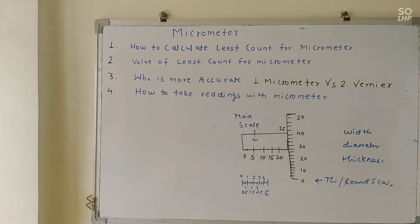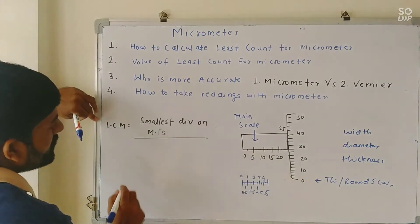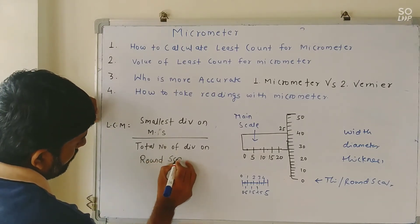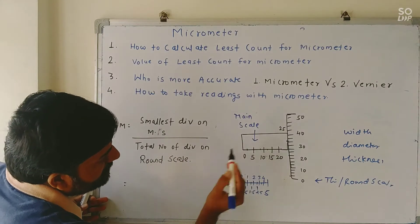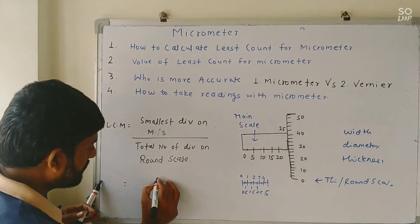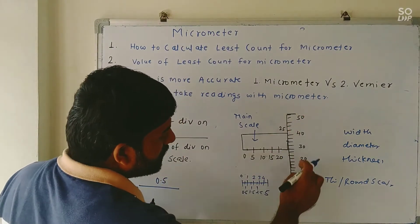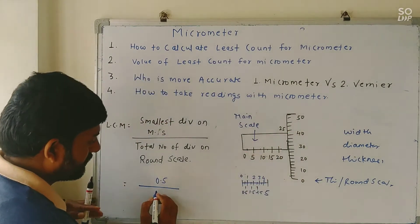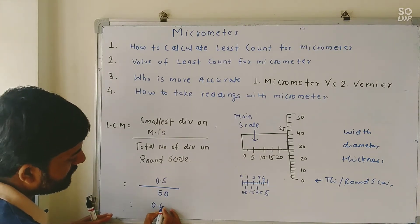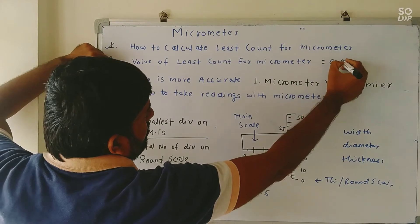How to calculate least count for micrometer: the formula is least count equals smallest division on main scale divided by total number of divisions on round scale. The smallest division on the main scale is 0.5 mm. Total number of divisions on the round scale are 50. So this becomes 0.5 divided by 50, which equals 0.01 mm. The value of least count is 0.01 mm.